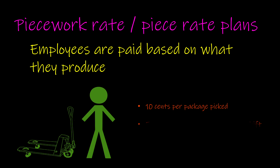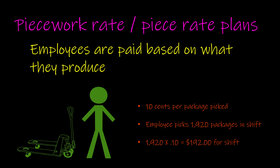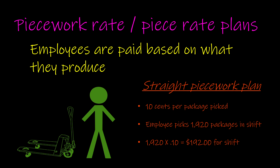Maybe over the course of an eight-hour shift, the employee is able to pick 1,920 packages. And because we're paying them 10 cents per package shipped, they are able to earn $192, which works out to about $24 per hour. The example that we just provided here is what we would call a straight piecework plan. The reason we call it a straight piecework plan is because no matter how much the employee produces, they get paid the same amount per unit produced, or in this case, per package picked.